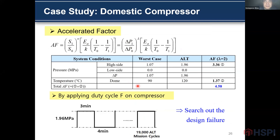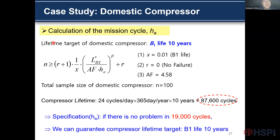For the temperature: worst case ambient temperature is 19°C, while for ALT testing the increased ambient temperature is 120°C. The total ALT acceleration factor is 4.6. We apply some duty cycle, and we can search for our design failure. The life target of the domestic compressor is about 10 years, and the ALT factor is 4.6. Total sample size of the domestic compressor is 100. The compressor life target for 10 years is almost 87,000 cycles. There is no problem at 19,000 cycles, but we cannot guarantee the compressor life target beyond 10 years from this result.